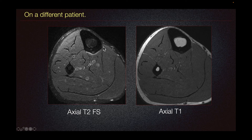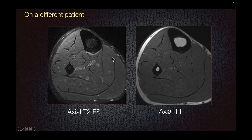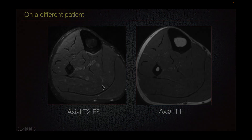When evaluating for stress fracture or medial tibial stress syndrome, we want to make sure that the signal abnormality along the cortex is not a vessel. We determine that by following and scrolling through the images to confirm it is not a vessel running through the area. We also evaluate for any muscle signal abnormalities such as atrophy or fatty infiltration, which we do not see on this patient.